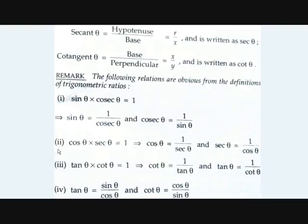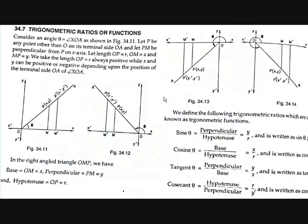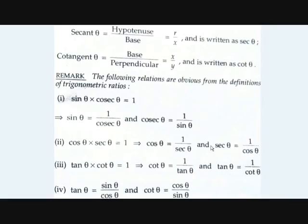Cos theta multiplied by secant theta is equal to 1. Secant theta is hypotenuse by base and cosine theta is base by hypotenuse. So cos theta equals 1 by secant, and secant theta equals 1 by cos theta.